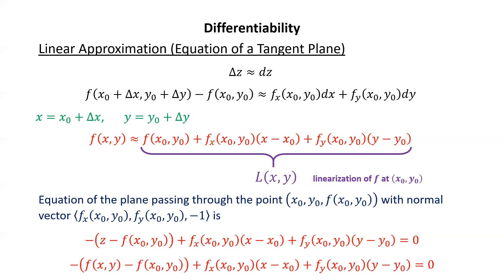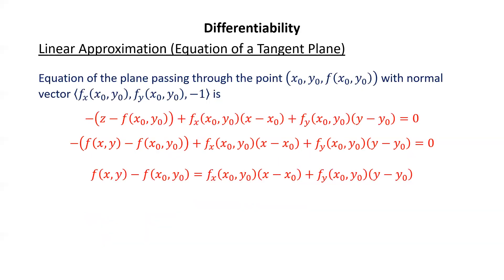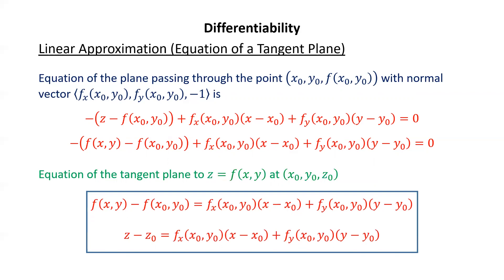We can rewrite by substituting f(x, y) for z, then rearranging to get: f(x, y) minus f(x₀, y₀) equals the partial of f with respect to x at (x₀, y₀) times (x minus x₀) plus the partial of f with respect to y at (x₀, y₀) times (y minus y₀). Equivalently, we can replace the left-hand side with z minus z₀. This expression is the equation of the tangent plane to z equals f(x, y) at the point (x₀, y₀, z₀), where z₀ is f(x₀, y₀).